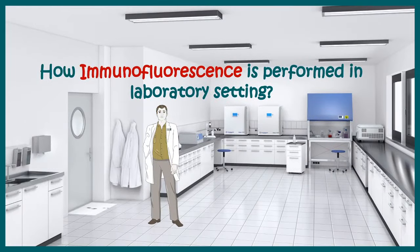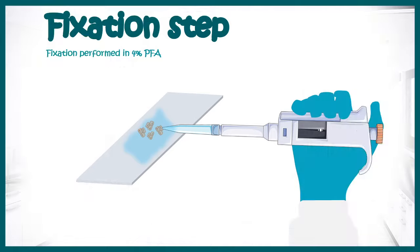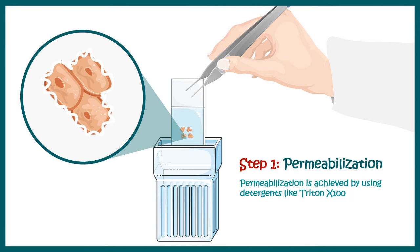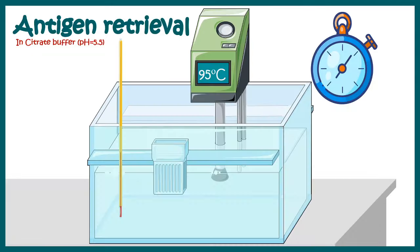Now let's move to a laboratory setting to understand how immunofluorescence is performed. The first step is to fix the sample using 4% paraformaldehyde. Then permeabilization is done in the presence of a detergent like Triton X-100, which permeabilizes the membrane and ensures the antibody can get inside the cell and detect the antigens.